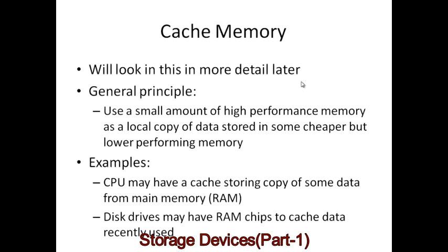We also have cache memory. The general principle for cache is that a small amount of high-performance memory acts as a local copy of data stored in a cheaper but slower memory form. Most CPUs have a cache that stores some of the program data from main memory, allowing the CPU to operate at full speed and only slowing down when it needs to fetch another chunk from main memory. Disk drives — especially hard disks — may also use RAM chips to cache recently accessed data, to limit dependency on the disk itself and allow faster access.